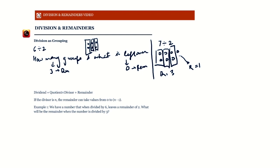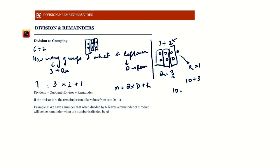This is the concept of division as grouping. The dividend is the number being divided — say seven. It equals quotient times divisor plus remainder. The quotient is the number of groups obtained (three), the divisor is how many marbles per group (two), and the remainder is one. We can write any number n = quotient × divisor + remainder. For example, 10 divided by 3: the quotient is 3, so 10 = 3×3 + 1.